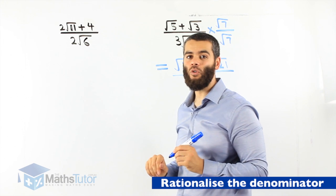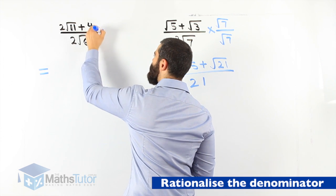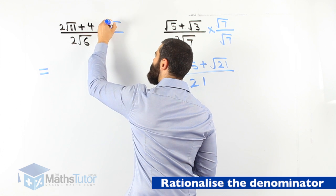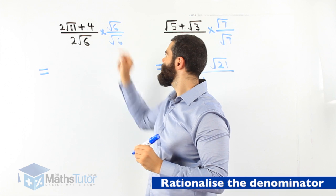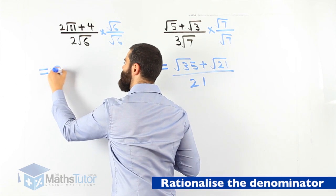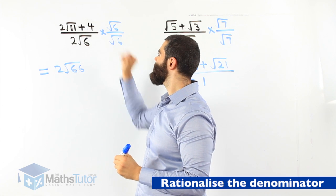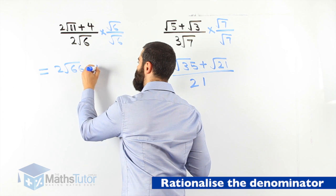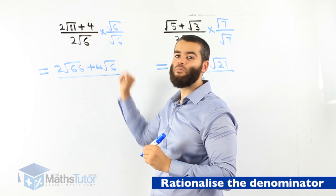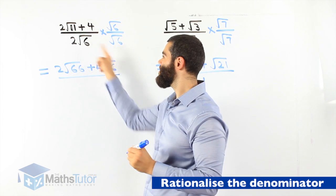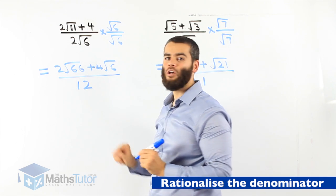Two root 11 plus 4, all over 2 root 6. Rationalizing the denominator, we multiply by the surd in the denominator: root 6 over root 6. So 2 root 11 times root 6 is 2 root 66, and 4 times root 6 is 4 root 6. For the denominator: root 6 times root 6 is 6, and 6 times 2 is 12. So our answer is 2 root 66 plus 4 root 6, all over 12.